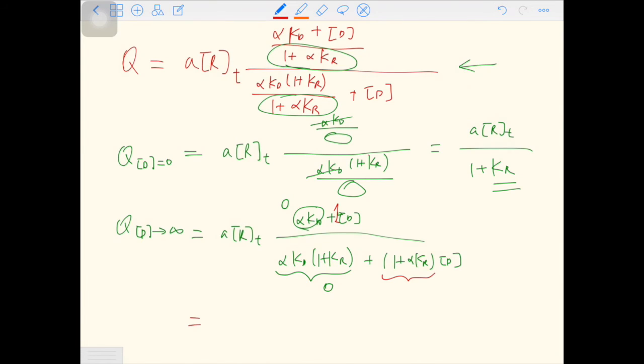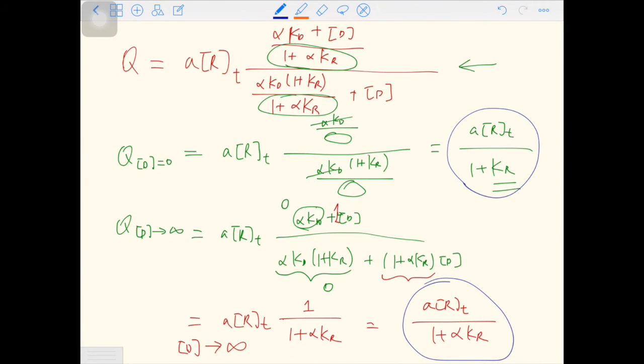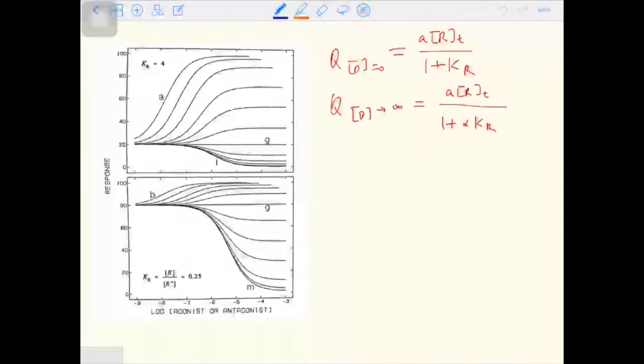So the limit of response when D approaches positive infinity is a times RT times the ratio of the constant, 1 over 1 plus alpha KR. So when you compare this and this, there is an extra alpha in this graph.